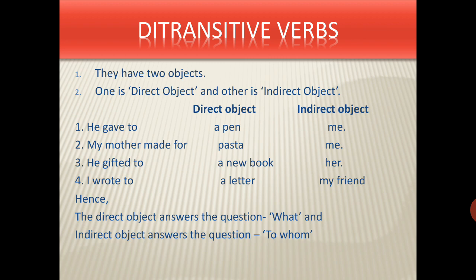Another example — 'My mother made pasta for me.' 'Made' is the verb. What has she made? Pasta — hence pasta is the direct object. For whom has mama made the pasta? Me — so 'me' is the indirect object. One more example: 'He gifted a new book to her.' Gifted is the verb. What did he gift? A new book — direct object. To whom was it gifted? Her — so 'her' is the indirect object. Hope it is clear that direct objects answer 'what' and indirect objects answer 'to whom'.